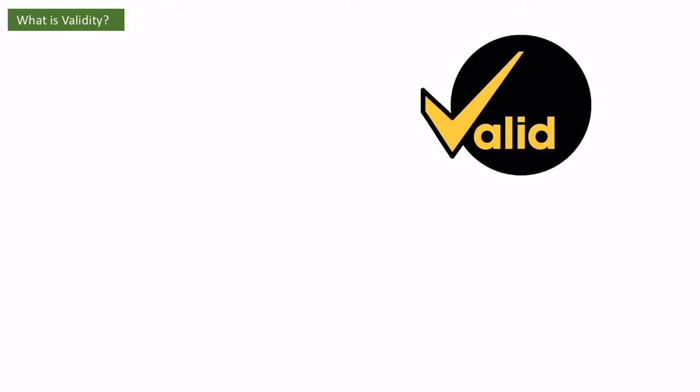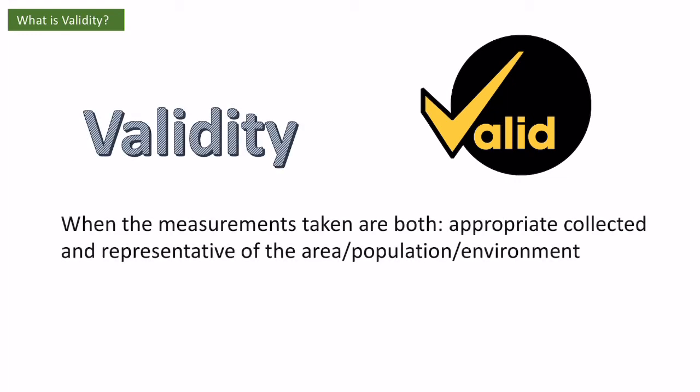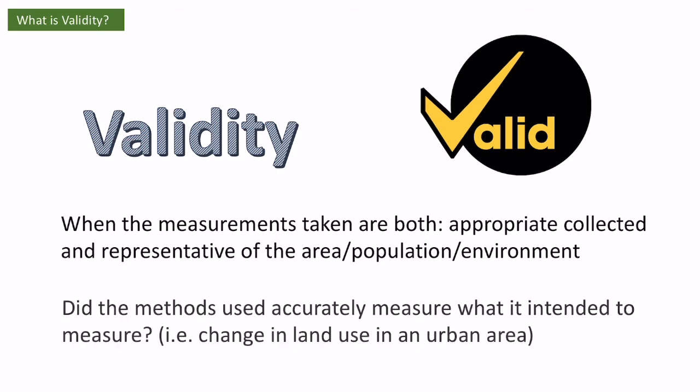The last key term is validity. Validity is the idea that the measurements we're taking must be both appropriately collected and representative of the area, population, or environment we're sampling from. At the end of my investigation I should be able to ask: did the methods I use accurately measure what I intended them to measure? So if I'm measuring land use change in an urban area, did my methods help me do that accurately, giving me valid conclusions from the data collected?